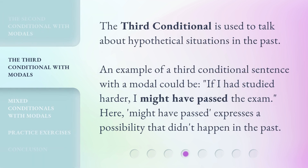The third conditional is used to talk about hypothetical situations in the past. An example of a third conditional sentence with a modal could be: if I had studied harder, I might have passed the exam. Here, 'might have passed' expresses a possibility that didn't happen in the past.